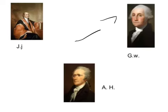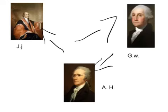So President George Washington wanted a treaty for both America and Britain. So he asked John Jay to help him negotiate a treaty with the British. In Britain, Alexander Hamilton gave John Jay some guidelines for this treaty.